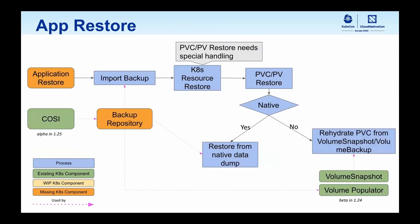The restore workflow is typically the reverse — you have a backup and you want to restore your application to a previously preserved state. The most challenging piece is the PVC/PV restoration. In the Kubernetes context, it needs quite a bit of special handling, and that's where components like volume snapshot and rehydrating the PVC come into the picture. We will also be talking about volume populator, which is beta in 1.24. COSI is in the picture as well because it serves as the backup repository to store your backups.